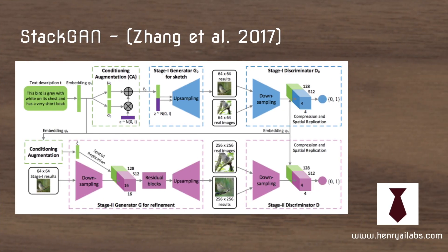Another idea is StackGAN, which follows a multi-scale philosophy of breaking down the high-resolution task into stages from 64x64 up to 256x256. In addition to the Stage 1 and Stage 2 process, they also add a multivariate Gaussian to smooth out the discontinuous text embedding space. This is overall really influential for stabilizing GAN training.